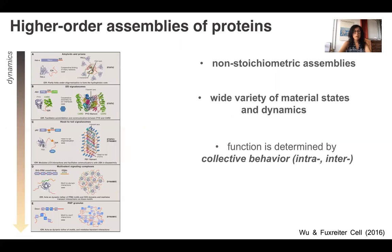In the cell, proteins form non-stoichiometric assemblies, which may sample a wide range of dynamics and material states — from a solid-like amyloid state to a liquid-like droplet state — sampling the whole continuum with many different kinds of signaling complexes. Function is determined by collective behaviour generated from both intra- and intermolecular interactions, and as you will see, these intermolecular interactions are much less defined in the case of non-stoichiometric assemblies.